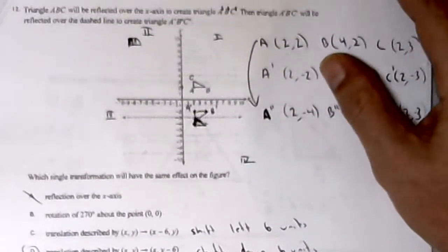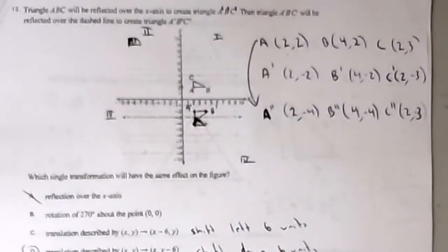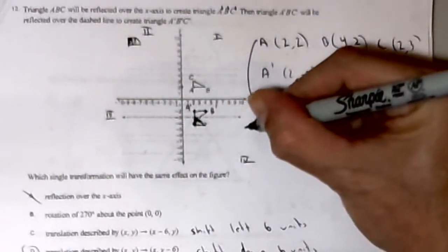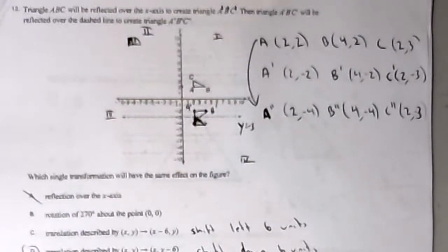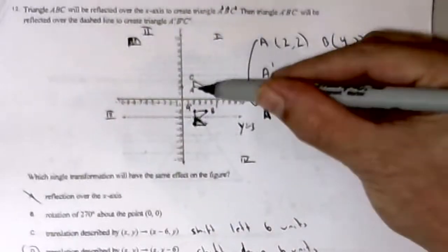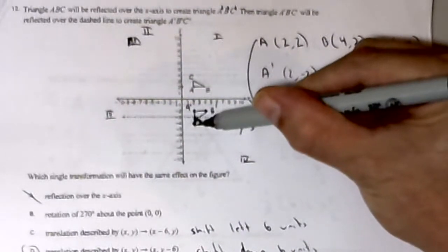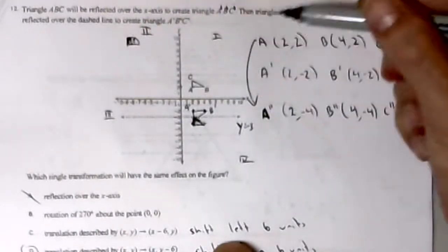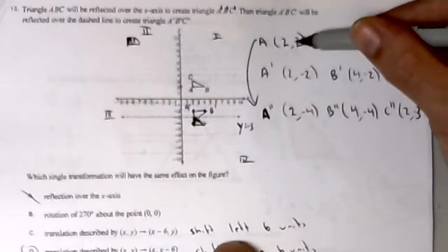Number 12 reads: triangle ABC will be reflected over the x-axis to create triangle A'B'C'. Then triangle A'B'C' will be reflected over the dashed line y equals negative 3. To create triangle A''B''C'', which single transformation will have the same effect? To reflect over the x-axis, I keep the x-coordinate and make the sign of the y-coordinate the opposite.